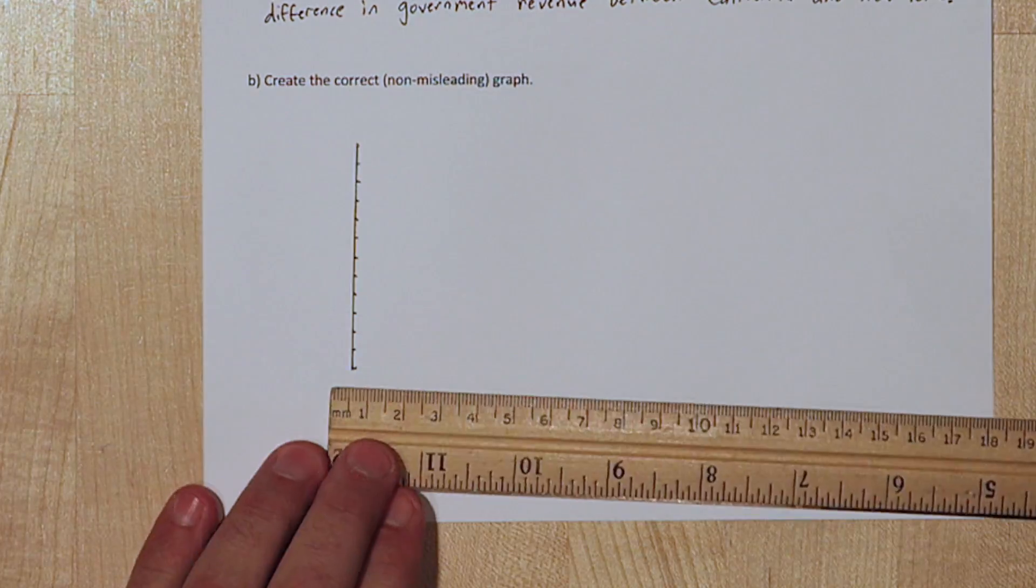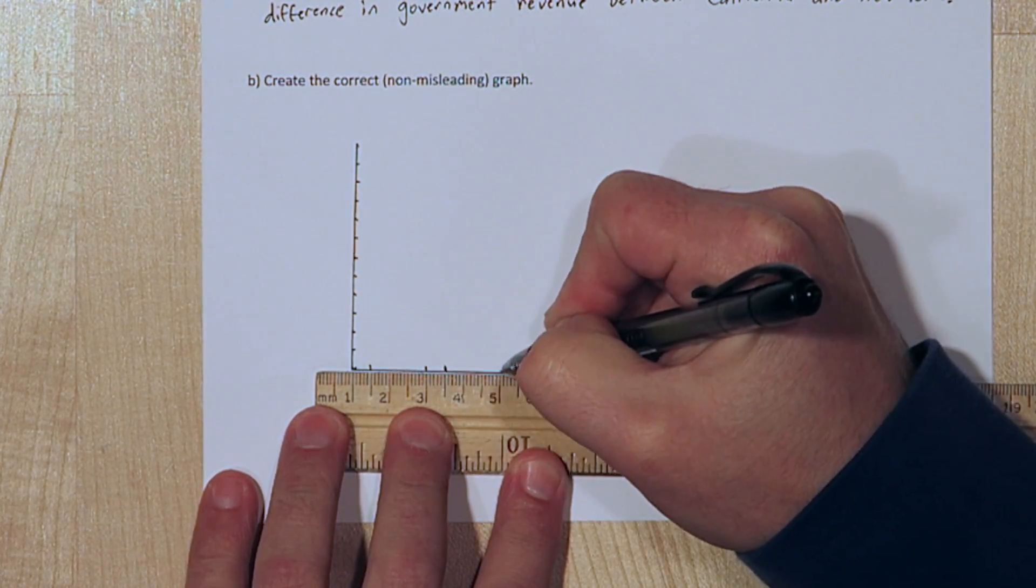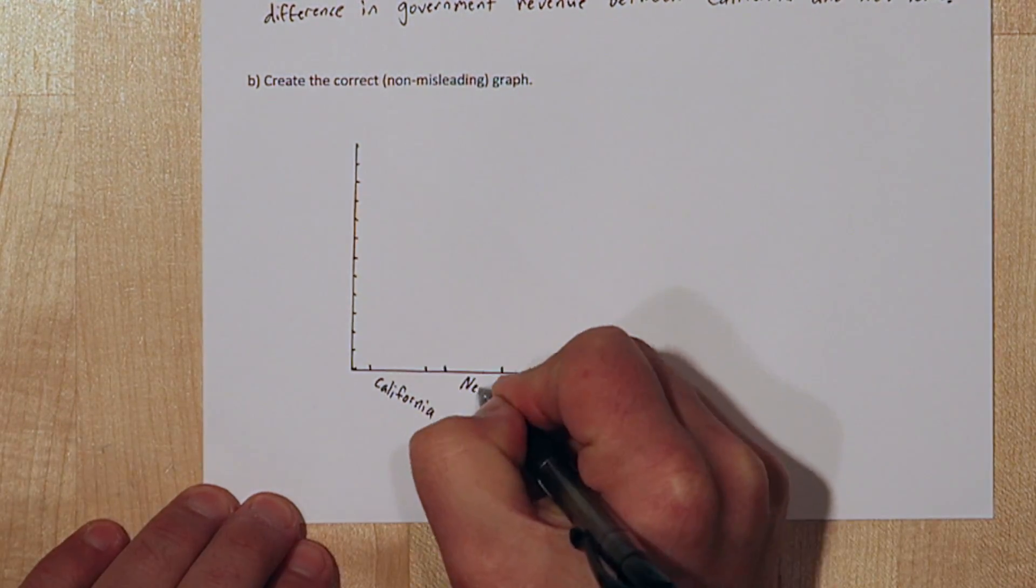Now let's create the correct graph. We'll start the vertical axis at zero and we'll go all the way up to three billion.